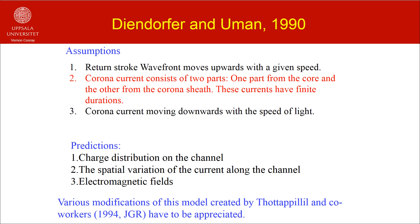In the model introduced by Deendorf and Heumann, the deficiency of Heidler's model was corrected by treating the corona current as an exponential function. They also assumed that the corona current consists of two parts: a fast component coming from the neutralization of the leader core and a slow component coming from the neutralization of the corona sheath. As inputs of the model they had the return stroke speed, the time constants related to the corona currents, and the channel base current. As in Heidler's model, they assumed that the corona current moves downwards with the speed of light. The model could predict the charge distribution on the leader channel, the spatial variation of the current along the return stroke channel, and the electromagnetic fields.